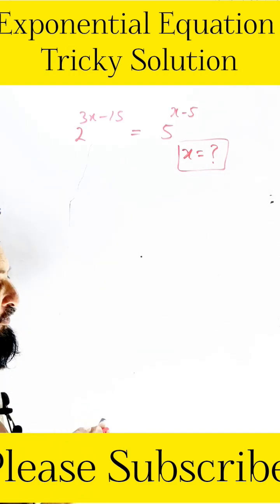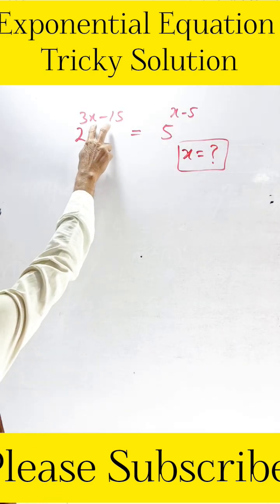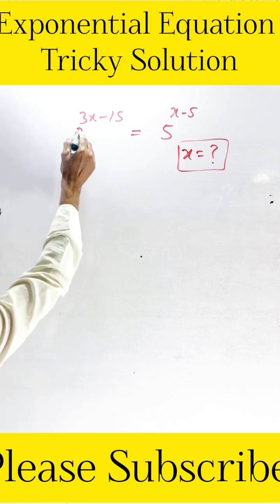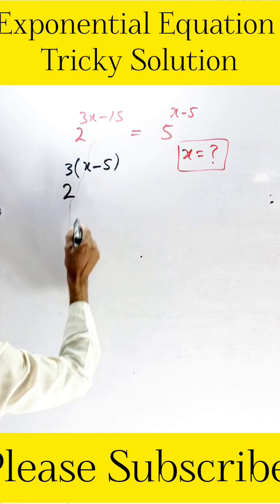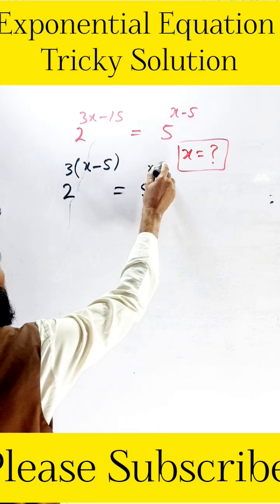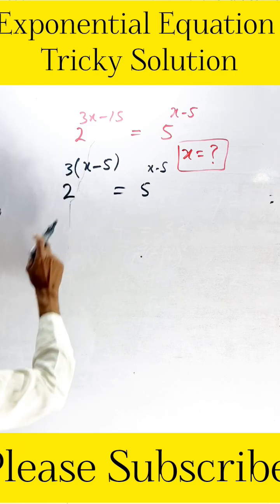In this type of question, first of all we can expand. We are taking the like term of their exponent. Here 2 is the base, and here we are taking common 3 is common, 3 and 5 multiply we get 15. Similarly, 5x minus 5.